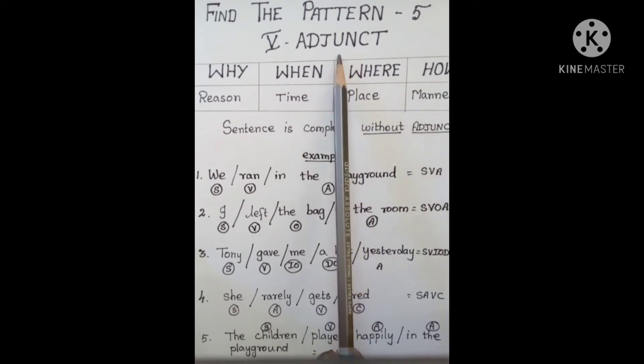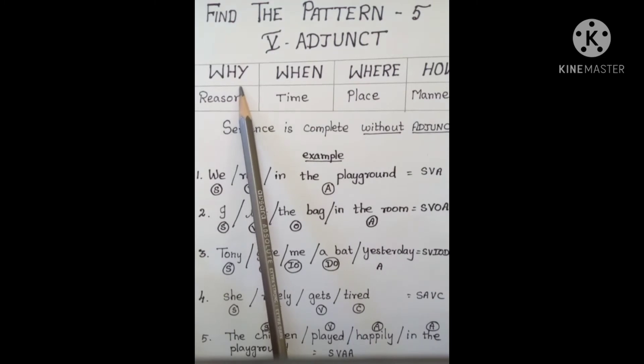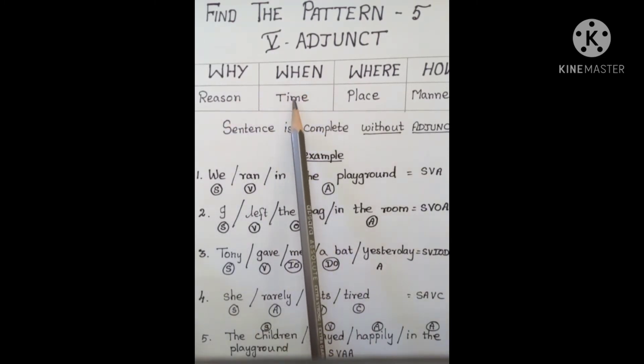Adjunct is the way you identify. If you recognize the words: why and reason, when and time, where and place, how and manner. This is a specialty.